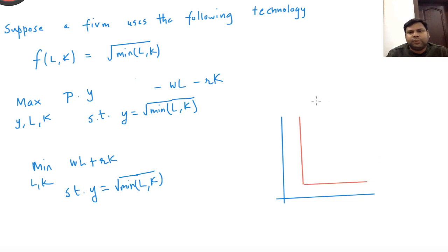This is the isoquant corresponding to y level of output, so the objective is to choose a point on this isoquant that minimizes the cost. Here it's simple because when we plot iso-cost curves, they're going to look like this with slope w by r. This is the lowest possible iso-cost curve that passes through the isoquant.